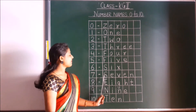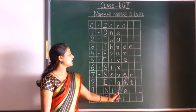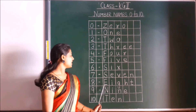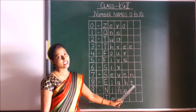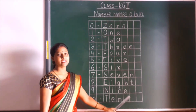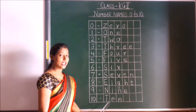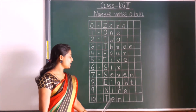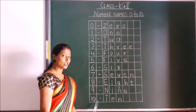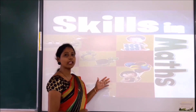5 F-I-V-E, 5. F-I-V-E, 5. S-I-X, 6. S-I-X, 6. Now what should we come to? Number 7. S-E-V-E-N, 7. S-E-V-E-N, 7. E-I-G-H-T, 8. E-I-G-H-T, 8. I hope you all are repeating with me, children. 9 N-I-N-E, 9. N-I-N-E, 9. Now 10 T-E-N, 10. T-E-N, 10. From 0 to 9 we have single digit numbers, and now 10 is a 2-digit number.